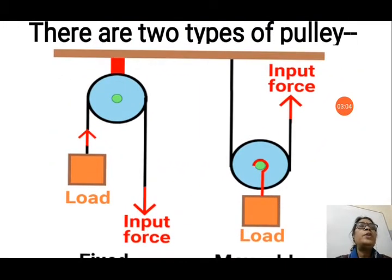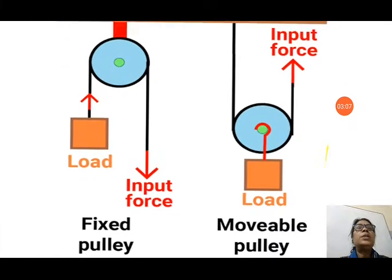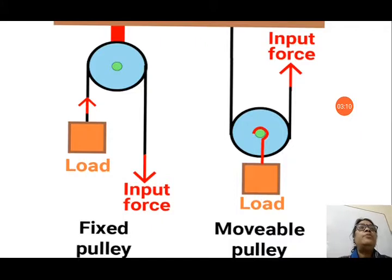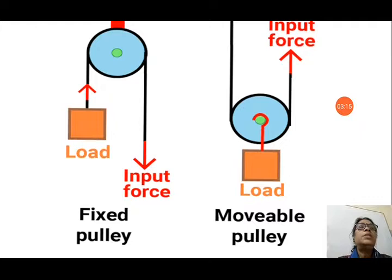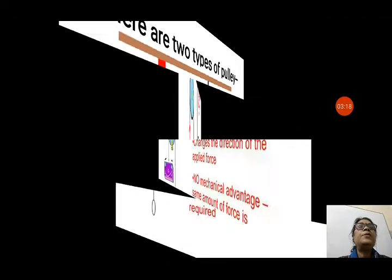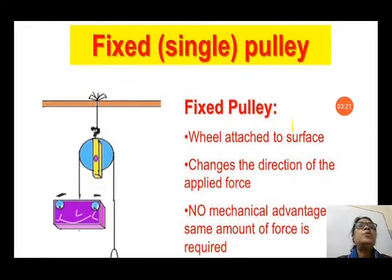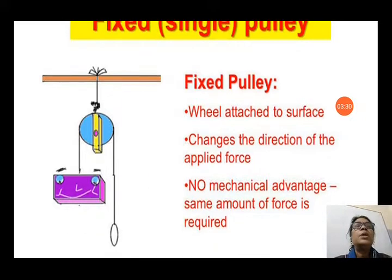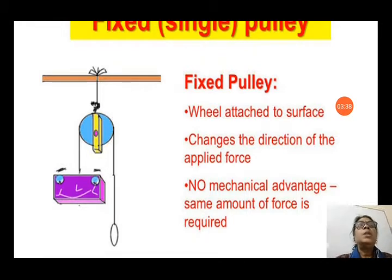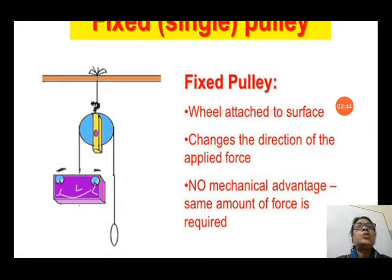There are two types of pulleys: fixed pulley and movable pulley. In a fixed single pulley, the wheel is attached to the surface. It changes the direction of the applied force — we pull downward and the object moves upward. However, there is no mechanical advantage; the same amount of force is required to carry the object.